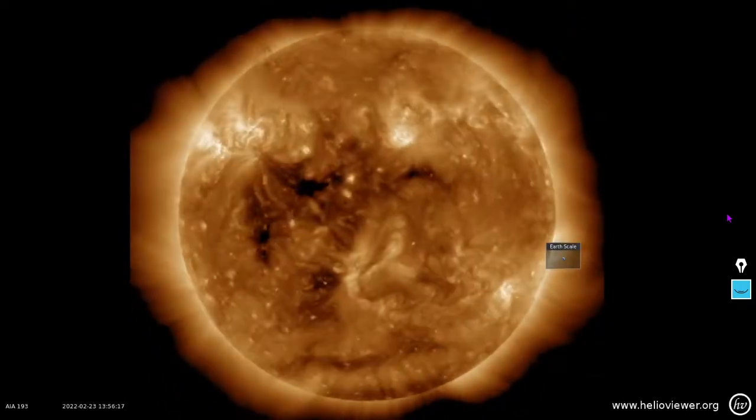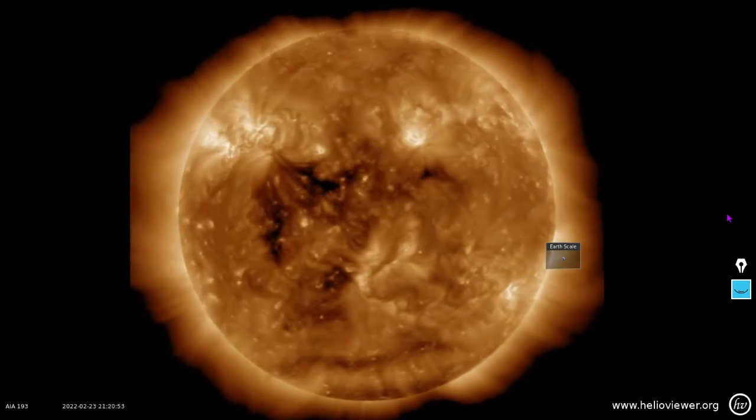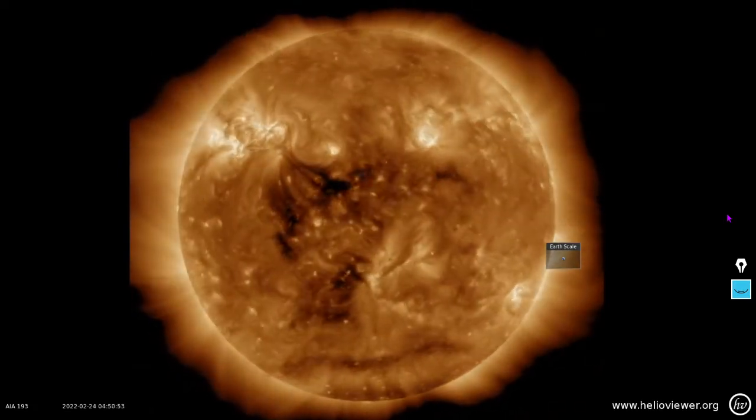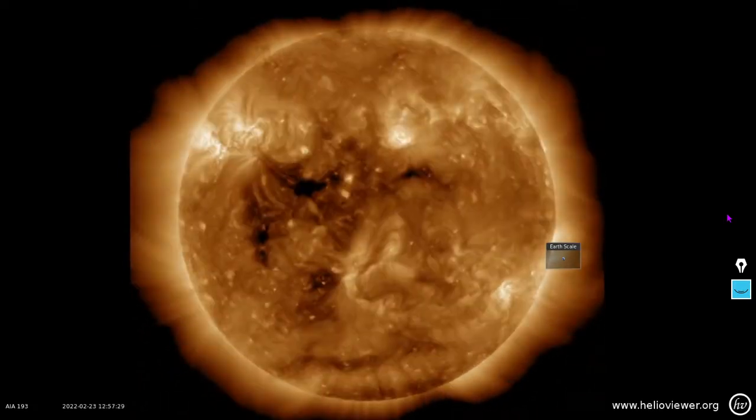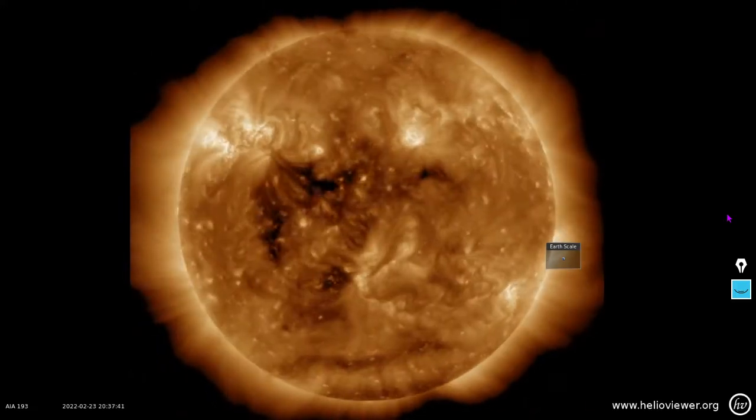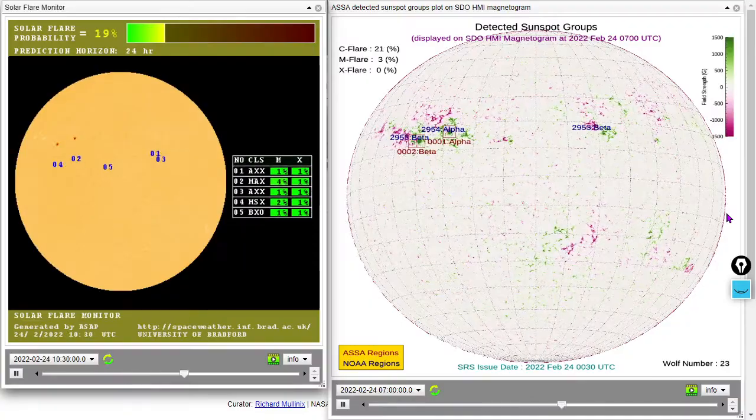Here's an ultraviolet light emission analysis of it, 193 angstroms ionized iron, and a fairly well-defined coronal hole there. We can expect a high-speed wind from that in about three days.